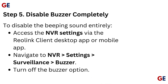Step 5: Disable buzzer completely. To disable the beeping sound entirely, access the Envir settings via the Reolink client desktop app or mobile app. Navigate to Envir Settings, then Surveillance Buzzer, and turn off the buzzer option.